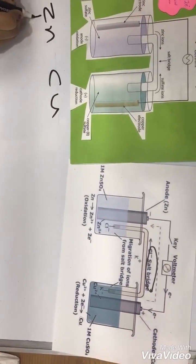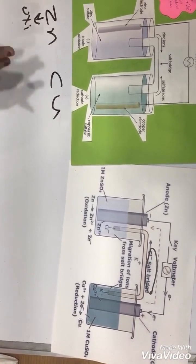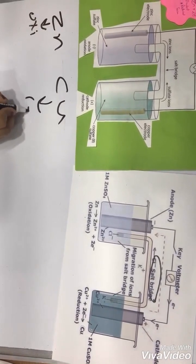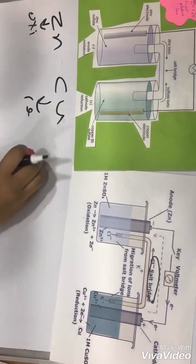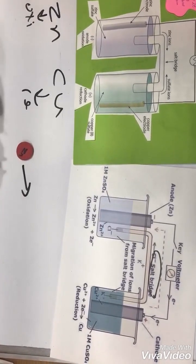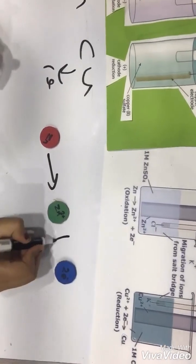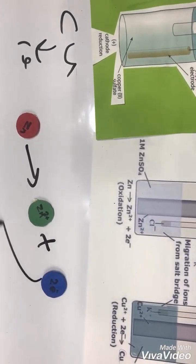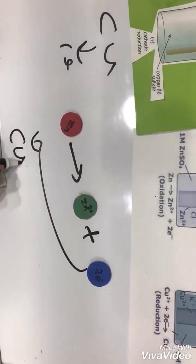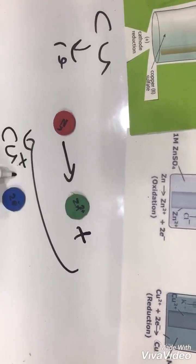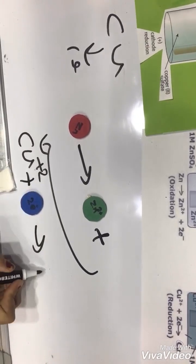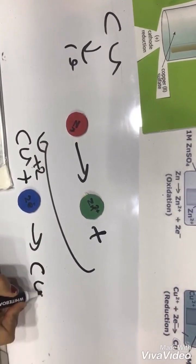Zinc will undergo oxidation because it's lower in electrode potential, and copper will undergo reduction. Here, zinc metal will undergo oxidation and will convert to zinc ion and will lose two electrons. The two electrons will go to copper ion, so it will convert to copper metal.